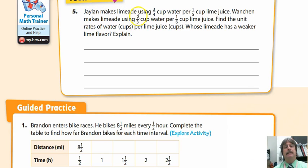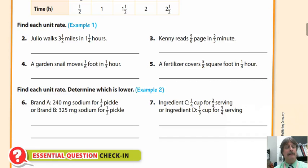On your turn here, Jalen makes limeade using three-quarters cup water per one-fifth cup lime juice. Wanshan makes limeade using two-third cup water per one-sixth cup lime juice. Find the unit rates of water in cups per lime juice. Whose limeade has a weaker lime flavor? I want to give you a hint: weaker lime flavor means one has either more water or less lime. Which one has more water if the lime juice is the same, or which one has less lime if the water is the same? Set it up as a complex fraction.